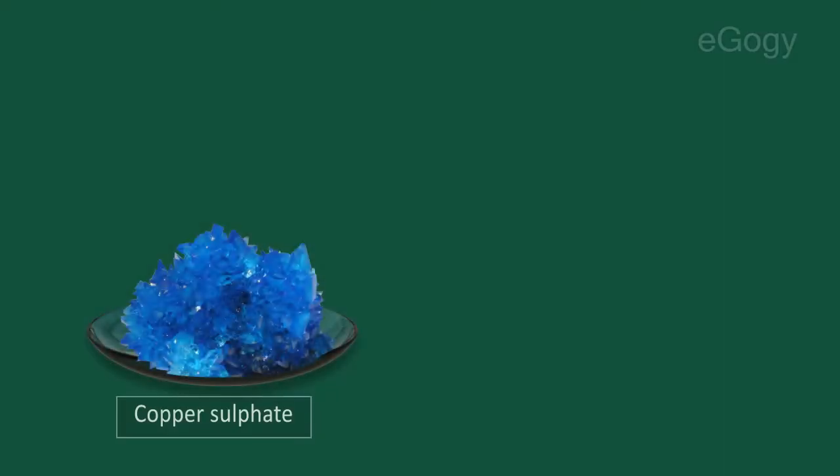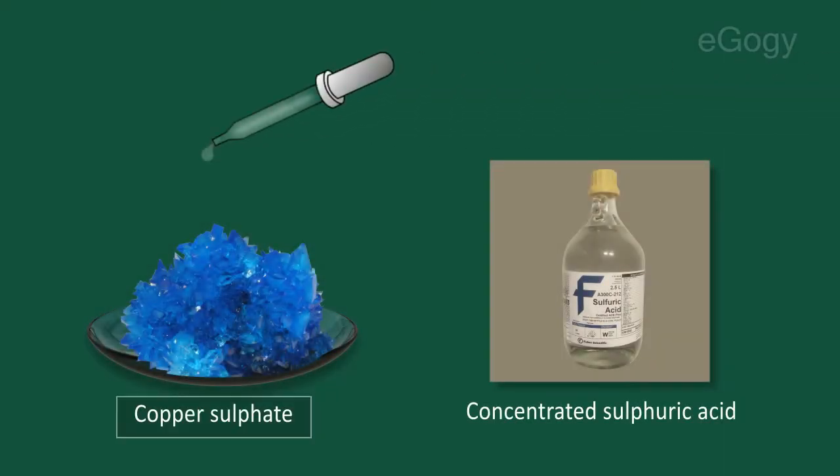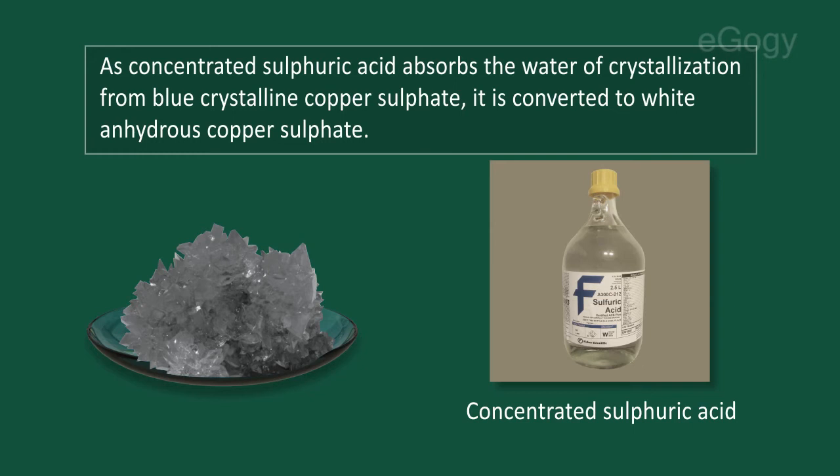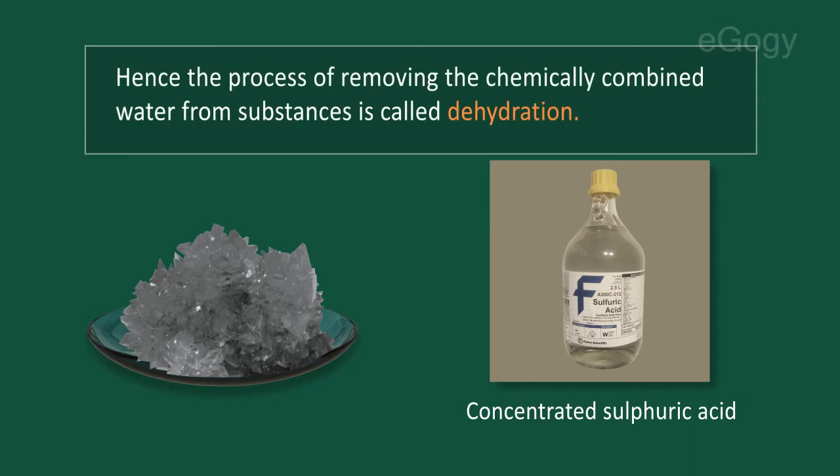Take a small amount of blue vitriol in a wash glass and add a few drops of concentrated sulfuric acid to it. As concentrated sulfuric acid absorbs the water of crystallization from blue crystalline copper sulfate, it is converted to white anhydrous copper sulfate. Hence, the process of removing the chemically combined water from substances is called dehydration.